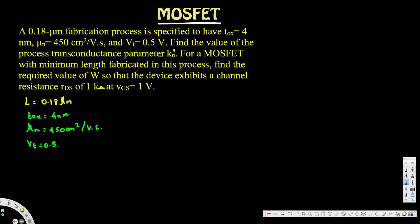The transconductance parameter kn prime can be calculated using the formula: kn prime equals μn times Cox. μn is provided as 450 centimeter squared per volt-second, but we need to find Cox.